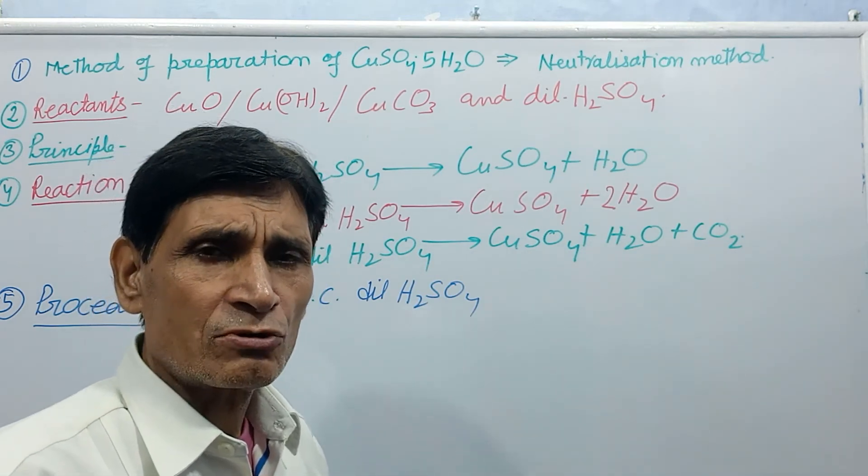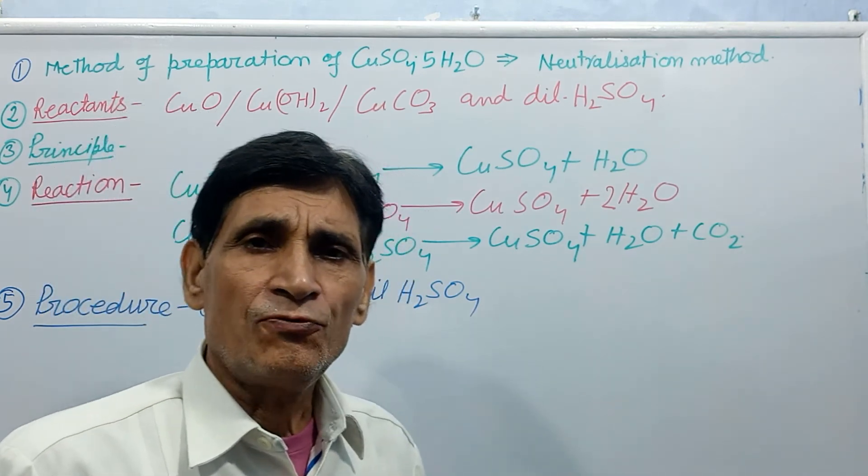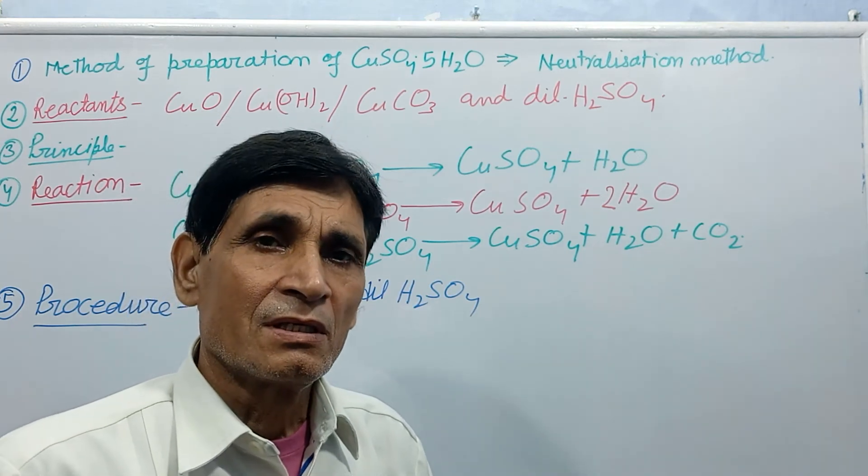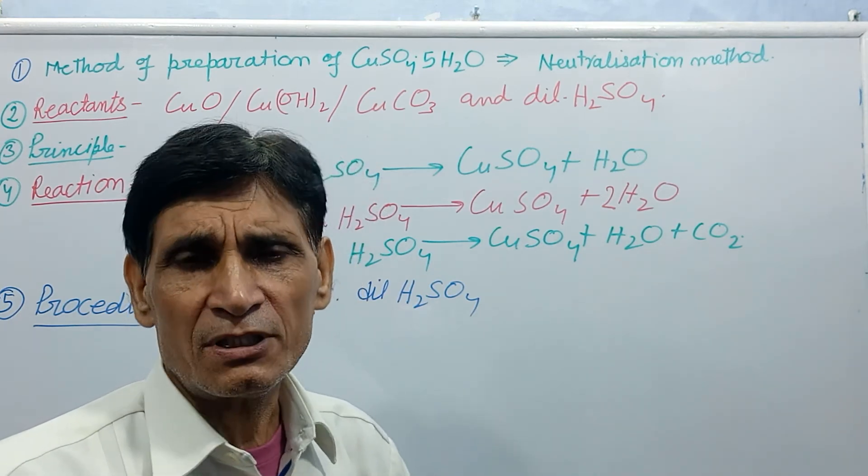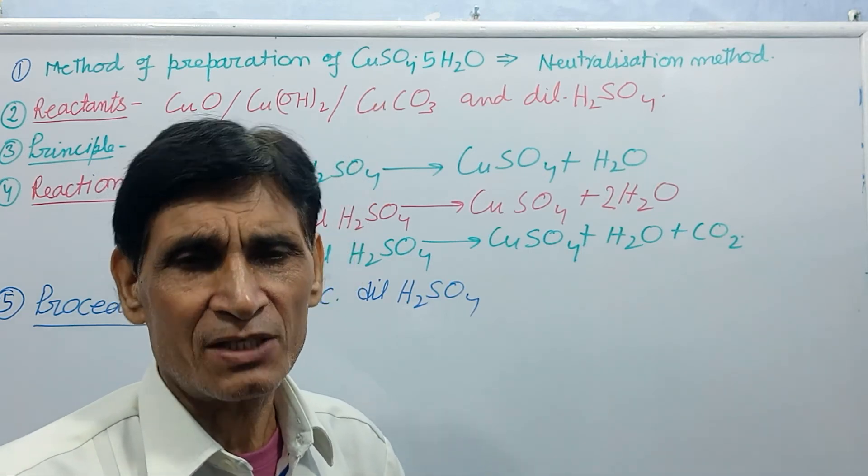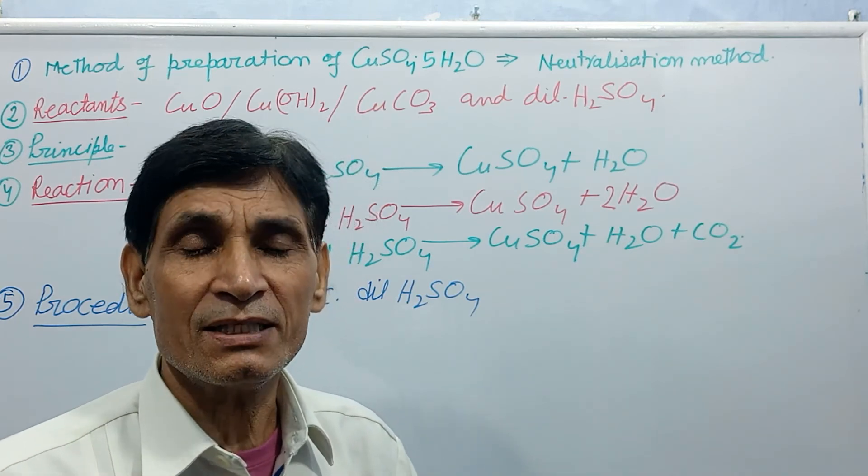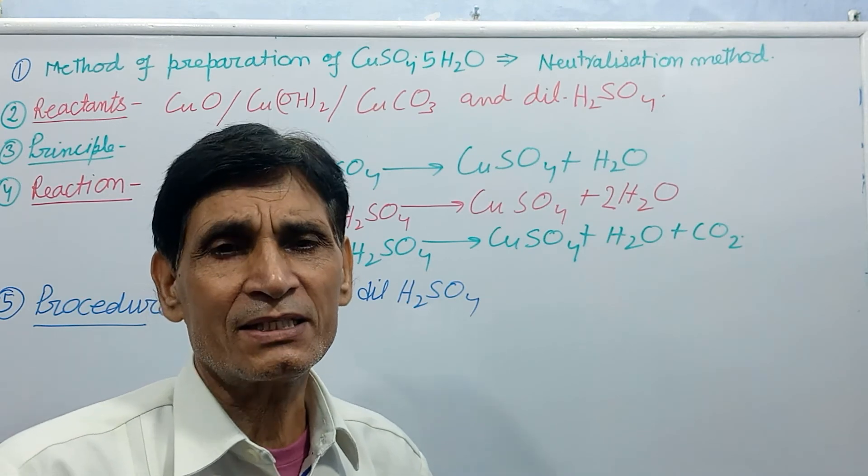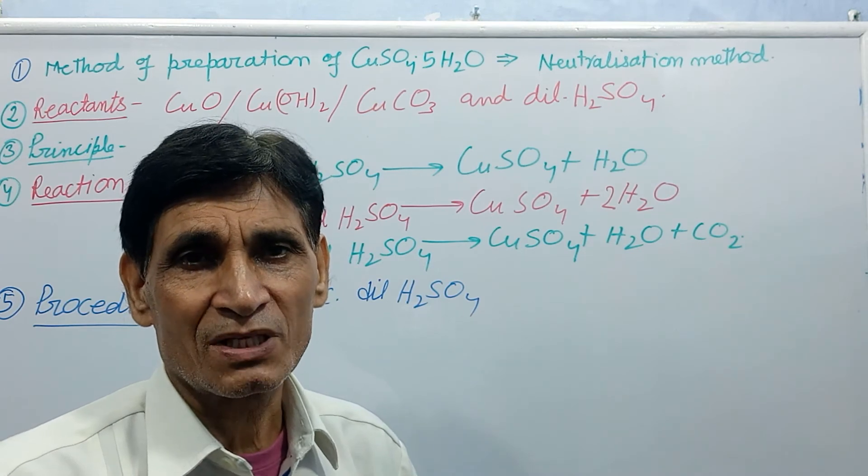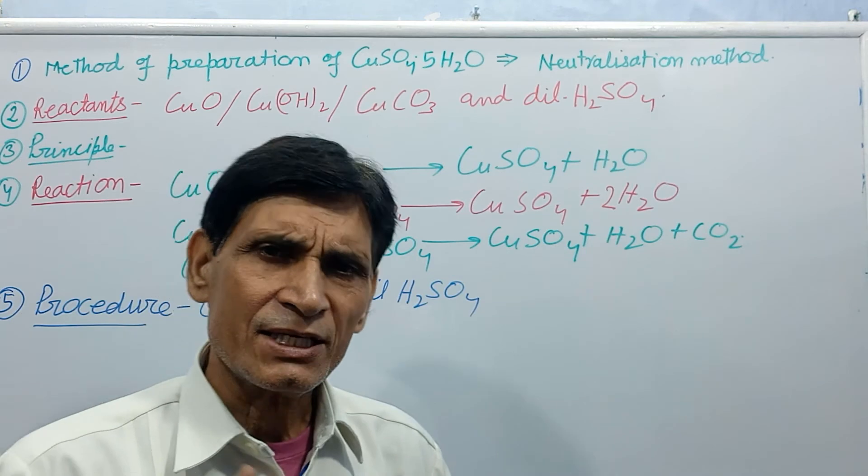Now, third point. Filter the content of the beaker. Filtrate obtained in another beaker, you transfer into the evaporating dish or china dish and heat it. Evaporate the filtrate till crystallization point or till crystallization appears. That is saturated solution of copper sulphate.